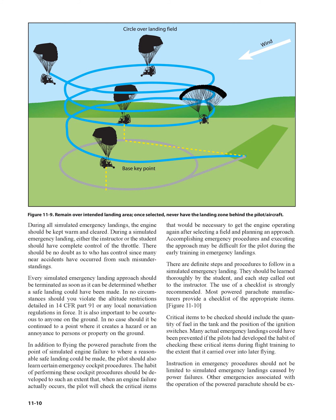During all simulated emergency landings, the engine should be kept warm and cleared. Either the instructor or the student should have complete control of the throttle — there should be no doubt as to who is in control, since many near-accidents have occurred from such misunderstandings. Every simulated emergency landing approach should be terminated as soon as it can be determined whether a safe landing could have been made. In no circumstances should you violate the altitude restrictions detailed in 14 CFR Part 91 or any local non-aviation regulations in force.